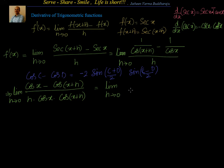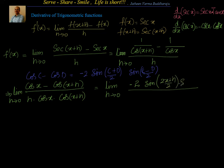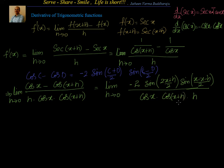We will have minus 2 sin of (x plus x plus h)/2, that is (2x plus h)/2, into sin of (x minus x minus h)/2, divided by cos x into cos of x plus h into h.